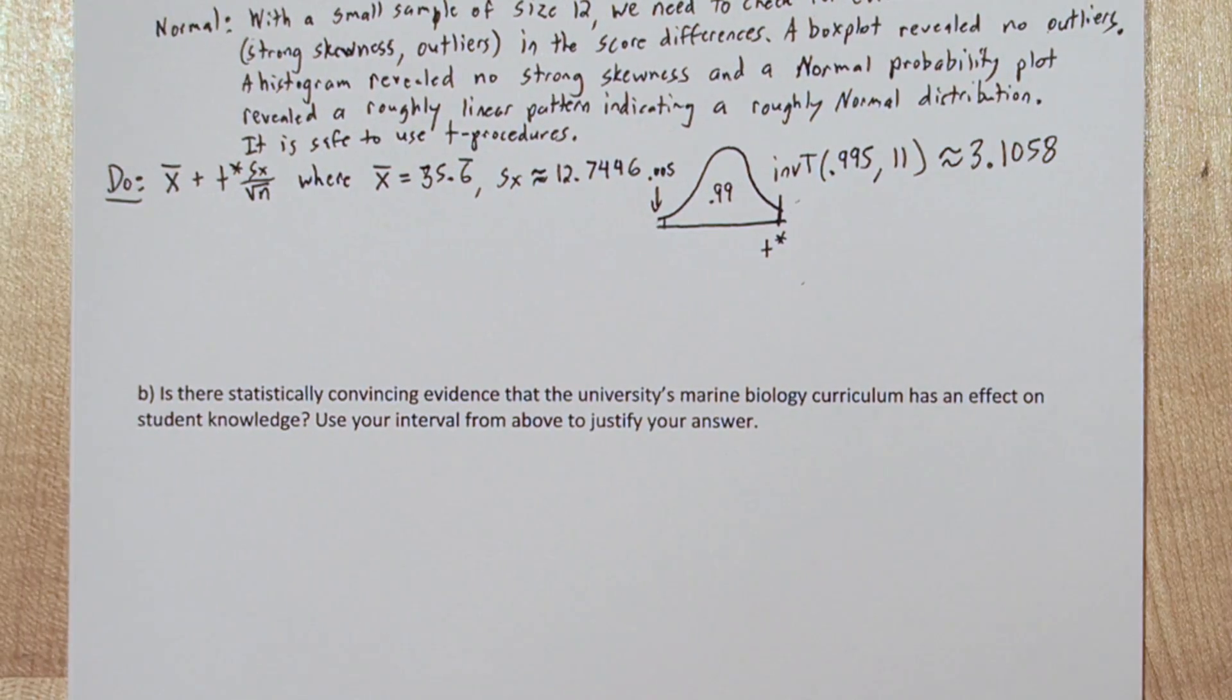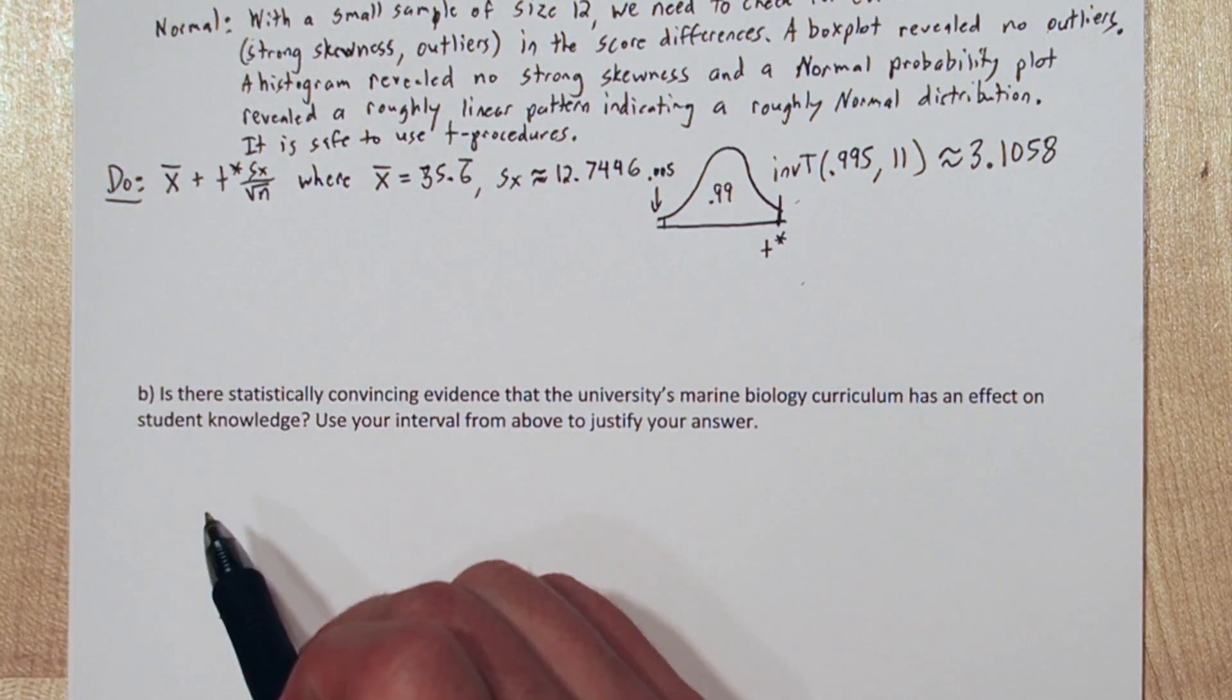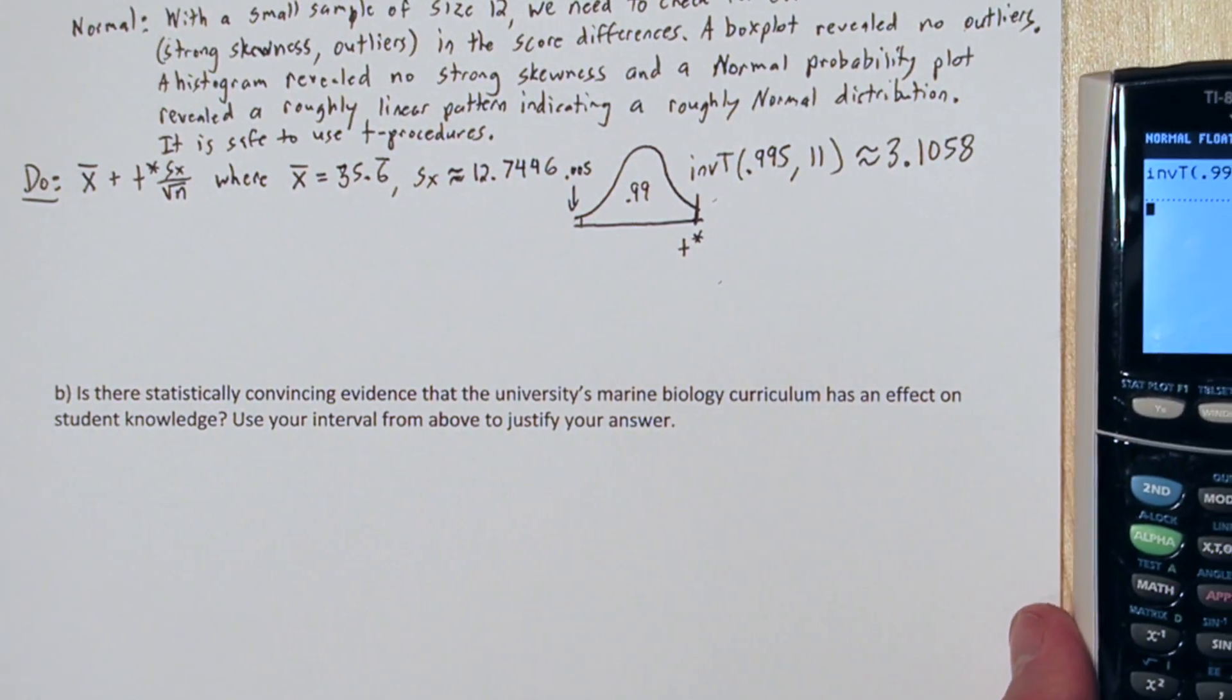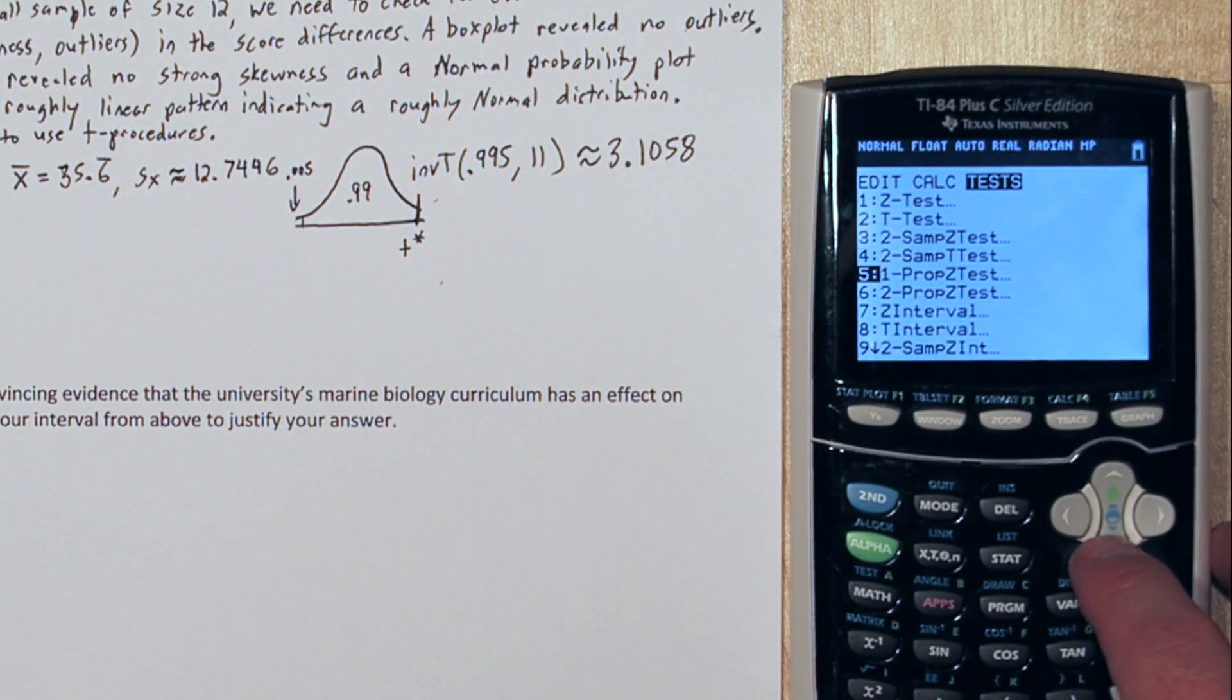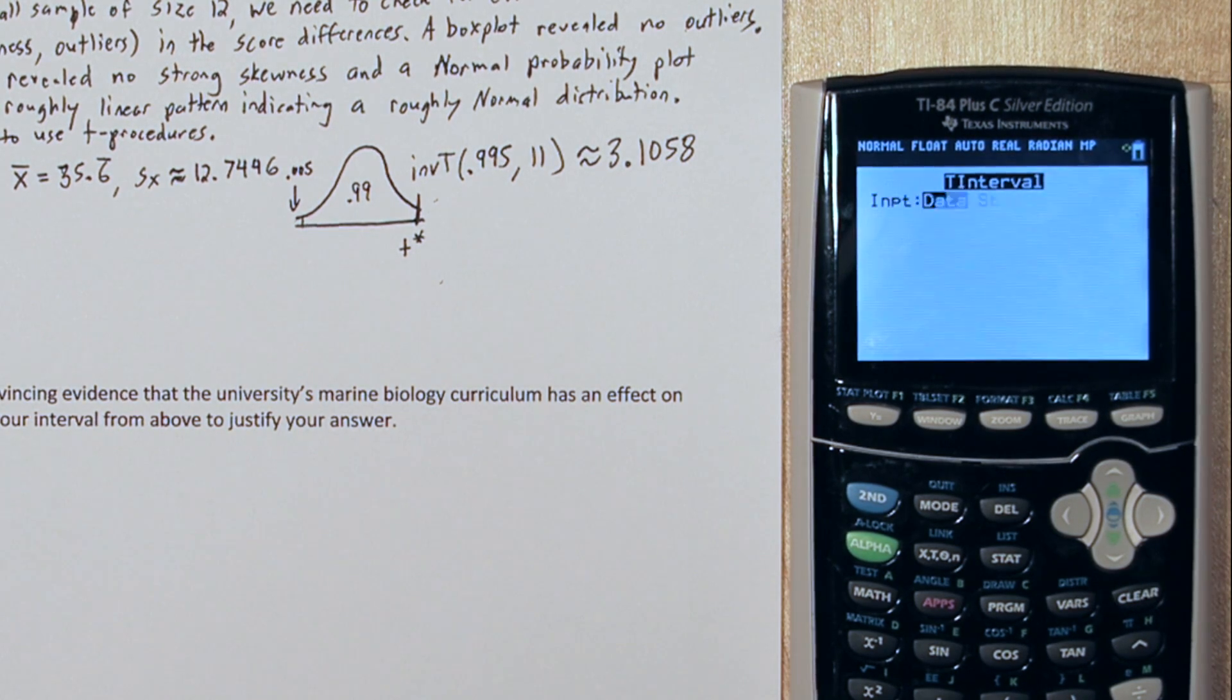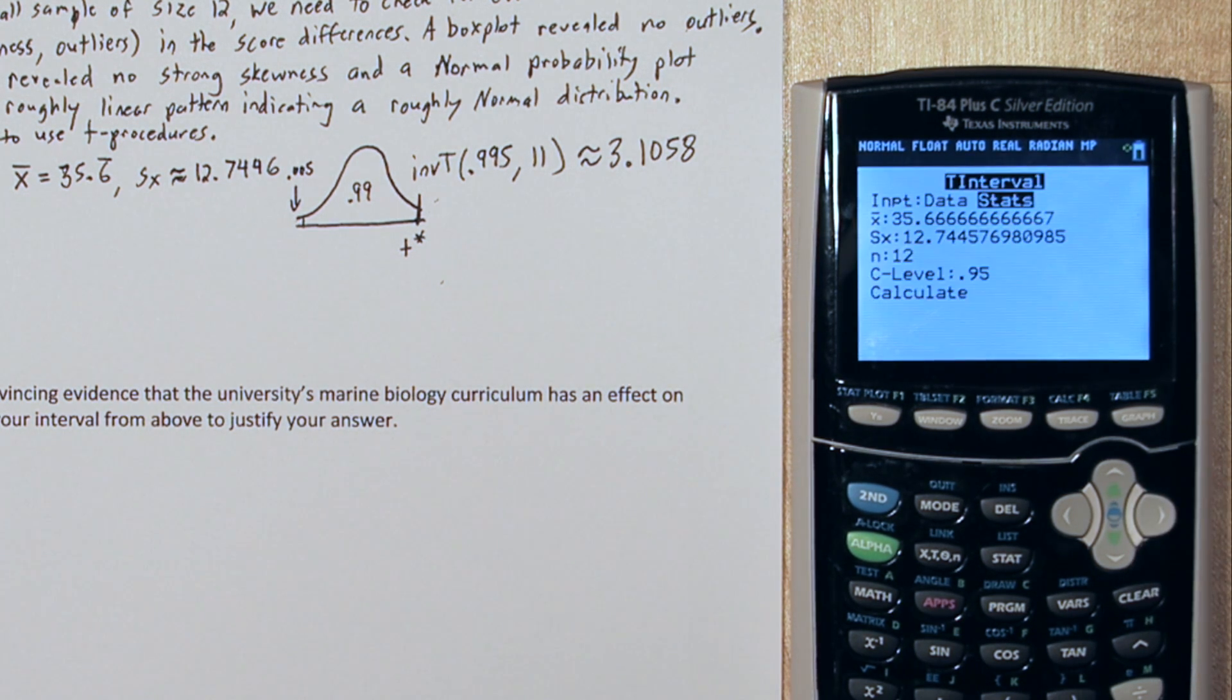Now, we could just input all these values into the formula and calculate it, but we can actually use the calculator to do it for us. If you press the stat button and go over to test, scroll down to t interval. Now, for input, we can either put data or stats. If we click on stats, we can see it already has our sample mean and sample standard deviation, sample size, but the wrong confidence level. So, we could just change this to 0.99, scroll down to calculate, and press enter. Here's our confidence interval.